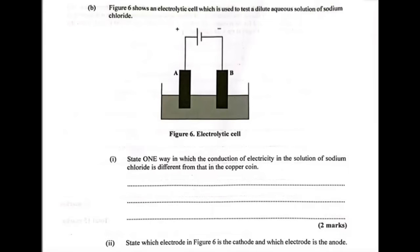Part B. Figure 6 shows an electrolytic cell which is used to test a dilute aqueous solution of sodium chloride. Keywords there: Dilute. State one way in which the conduction of electricity in the solution of sodium chloride is different from that in the copper coin.